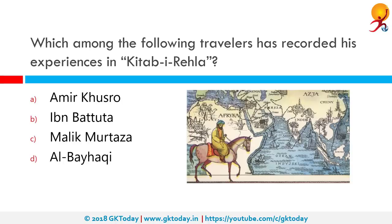Which among the following travelers has recorded his experiences in Kitab-i-Rahla? The correct answer is Ibn Battuta. Ibn Battuta was an Arab traveler and adventurer from Morocco. His book is a primary source of the history of the reign of Mohammed bin Tughlaq and throws light on the socio-political condition of his times.